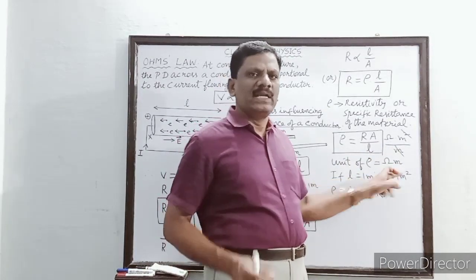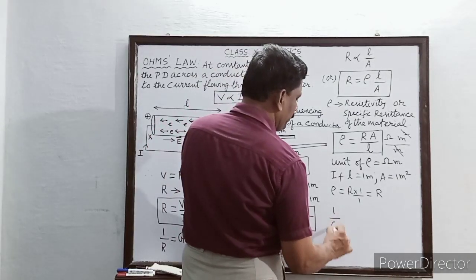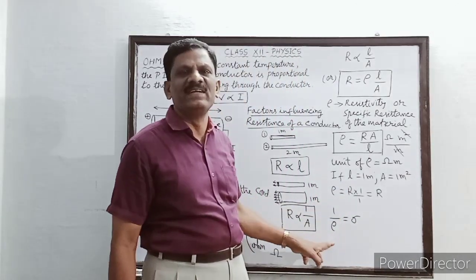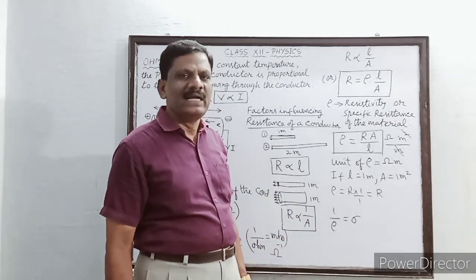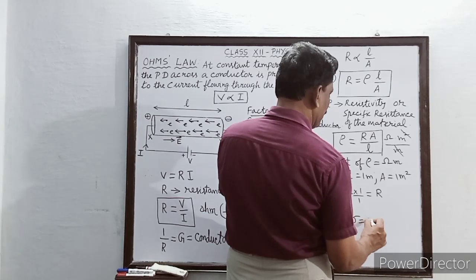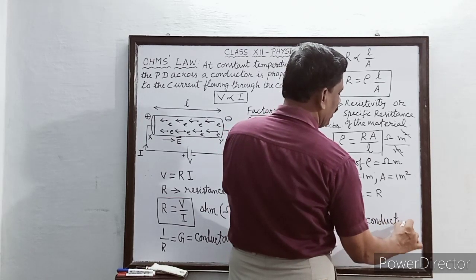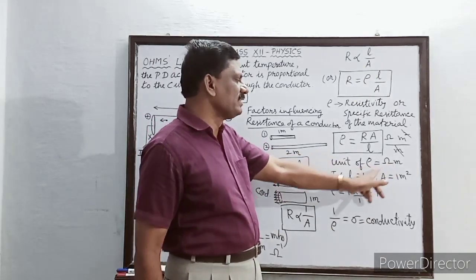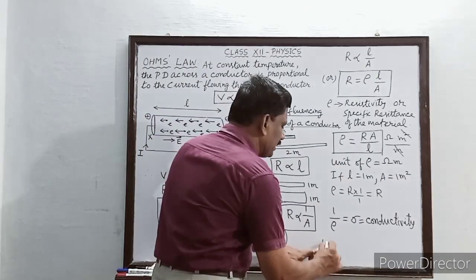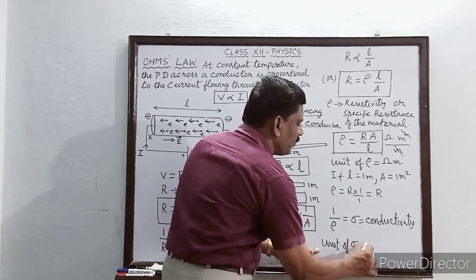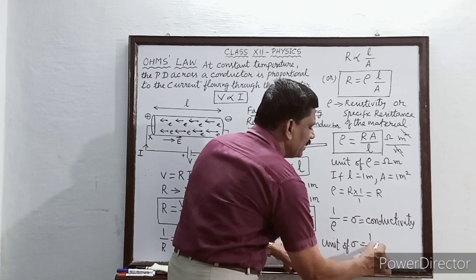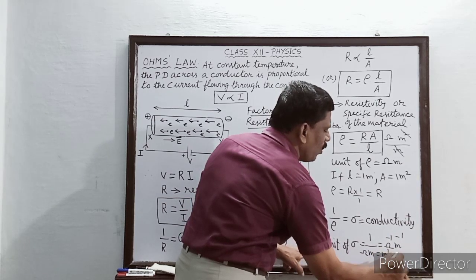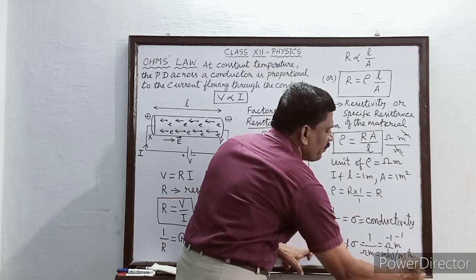The reciprocal of resistivity, 1/ρ, is denoted by the symbol σ and is called conductivity of the material. Conductivity is defined as the reciprocal of resistivity. If the unit of resistivity is ohm·metre, then the unit of σ is 1/(ohm·metre) = ohm⁻¹·metre⁻¹, also called mho per metre.